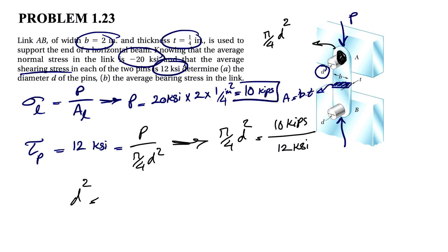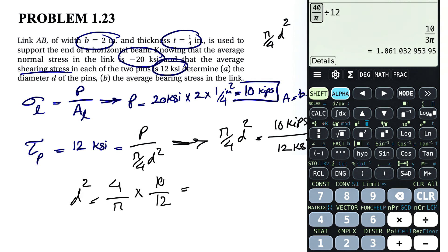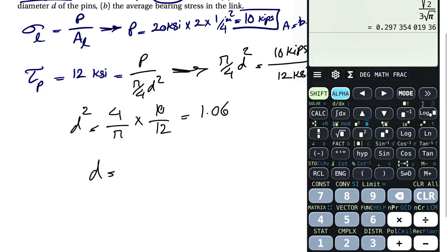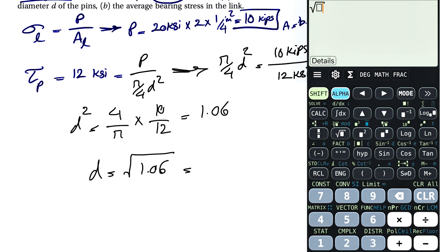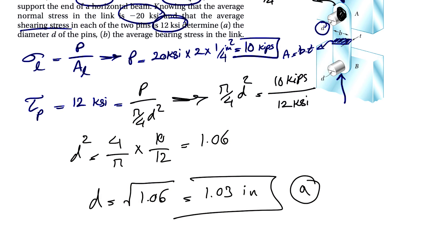D squared equals 4 over pi times 10 over 12. Calculating this gives 40 divided by pi divided by 12, which equals 1.06. We want the square root of that, so D equals the square root of 1.06, which is 1.03 inches. That is the answer for part A — the diameter of the pins.